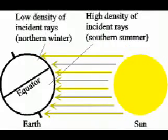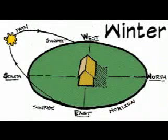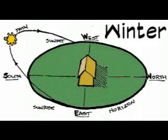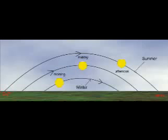In winter, we don't get very much sunlight. The Sun never gets really high in the sky, and it's pretty cold because of it — not much sun, not very high in the sky, cold. Here's the Sun's path in winter, summer, and the equinoxes.